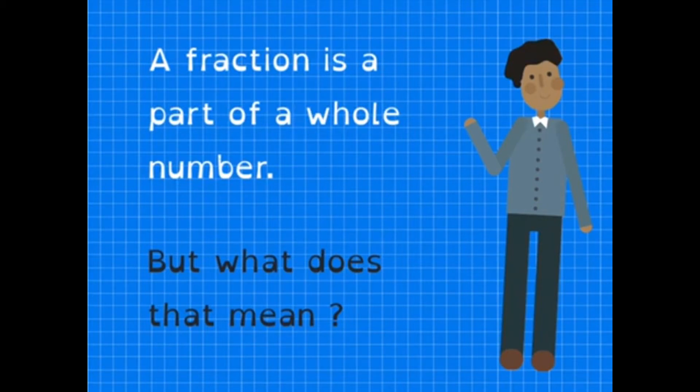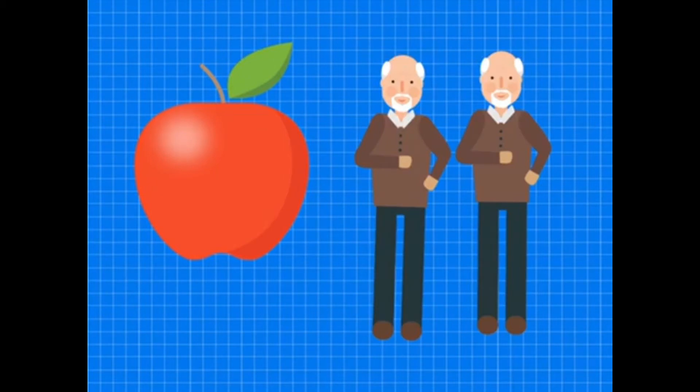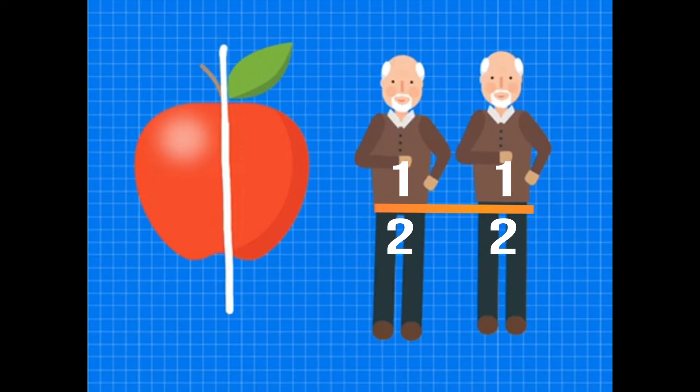Here I see that I have one whole apple. And here I see two people, and they're both equally hungry. So they have decided to share this apple. That means that each person is going to get half of this apple. That way they both get to enjoy the apple and have the same amount of pieces. And that is fractions.